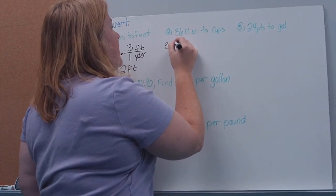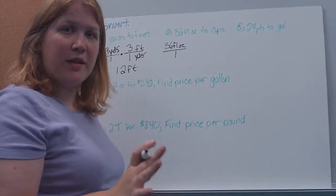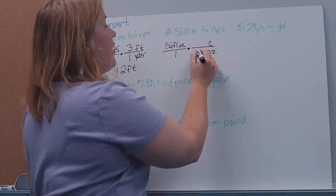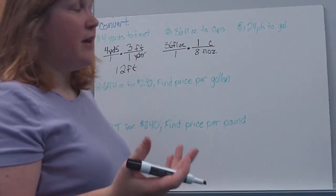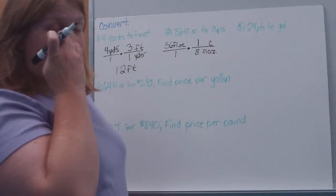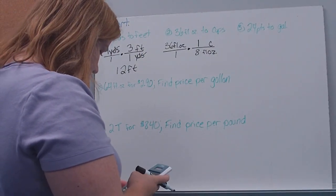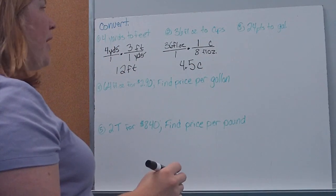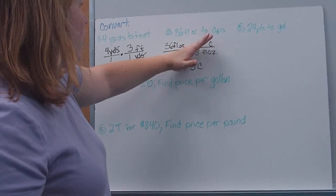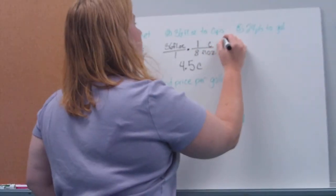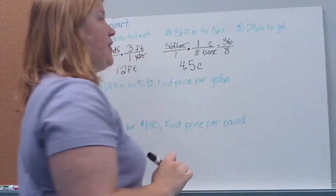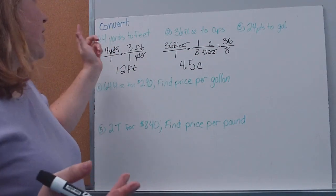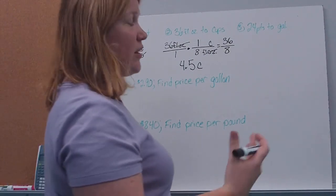Here I want to take 36 fluid ounces and convert them to cups. I write it over 1 to make it a fraction. I want fluid ounces to cancel, so those go on the bottom, and cups go on the top — there are 8 fluid ounces in one cup. So I get 36 over 8. 36 divided by 8 gives me 4.5, so I wind up with 4.5 cups, or four and a half cups. With the ones, they kind of go away — fluid ounces canceled and I'm left with cups. You could have said I'm going from small to large so I need to divide, but this is the dimensional analysis way to set it up.